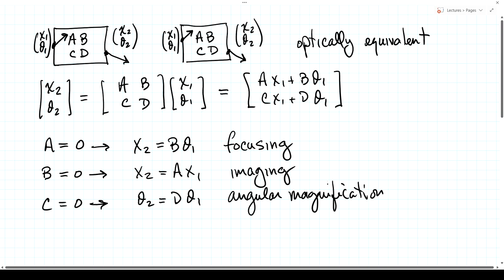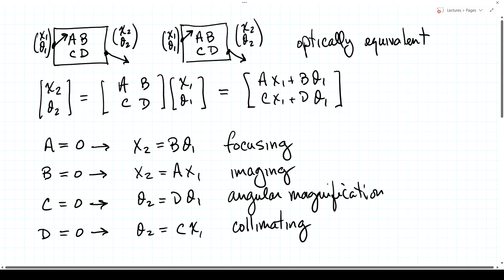A telescope is an example of a system with angular magnification. And finally, if D is equal to zero, then theta2 equals C·x1, meaning all rays leaving a certain point at the input come out with the same angle — they come out parallel. That is a collimating system. So those are four important special cases where one of the ABCD parameters equals zero.